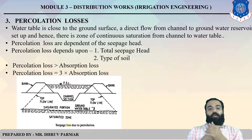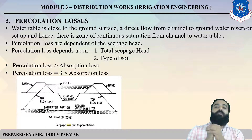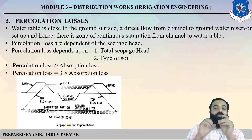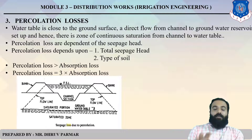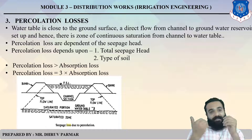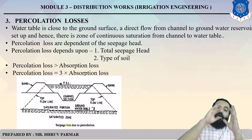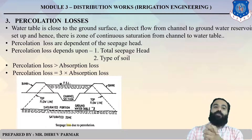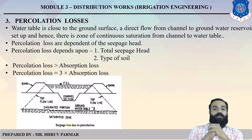The last type is percolation loss. In this case, the water table is close to the ground surface. There is direct flow from the channel to the groundwater reservoir, and there is a zone of continuous saturation from the channel to the water table. Percolation loss also depends on seepage head and type of soil. Percolation loss is very high compared to absorption loss — percolation loss is equal to three times absorption loss.